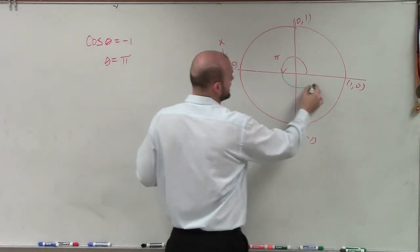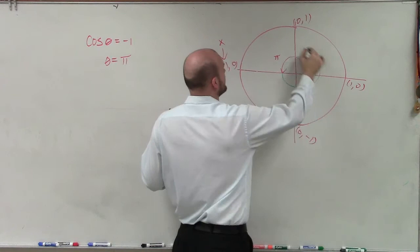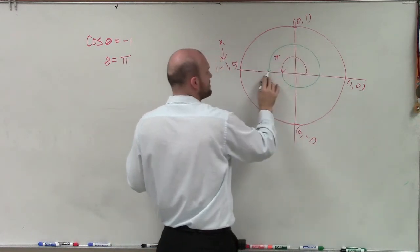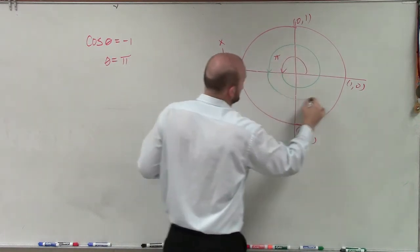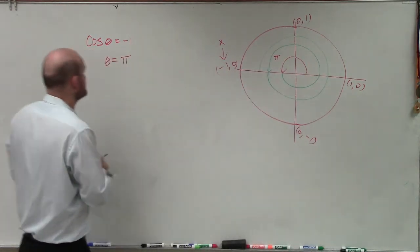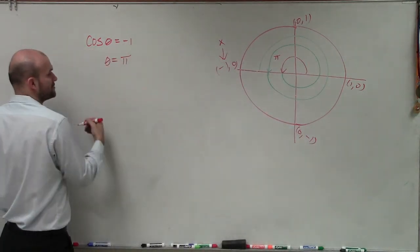If I add pi again, that's going to take me to a positive 1. But if I add 2 pi, that's going to take me back to negative 1, and then I have to add 2 pi again. So between the solutions of 0 and 2 pi, my answer would be pi.